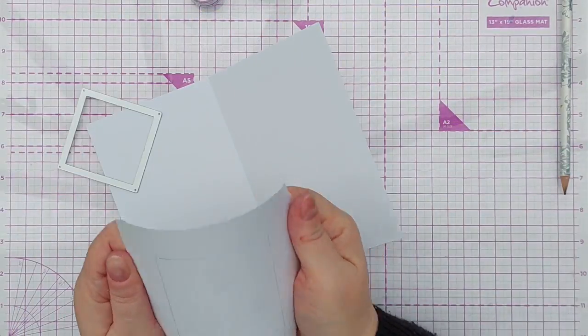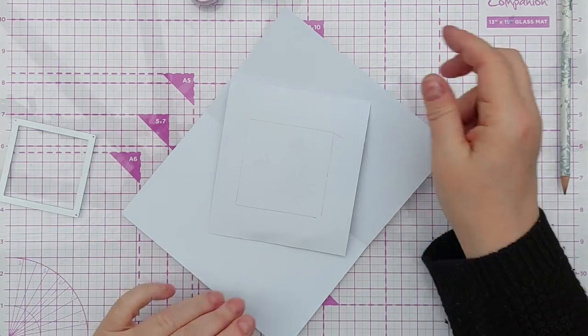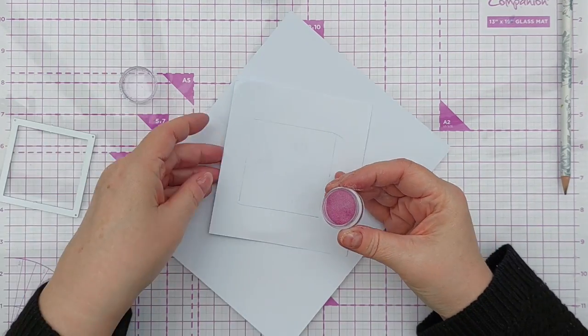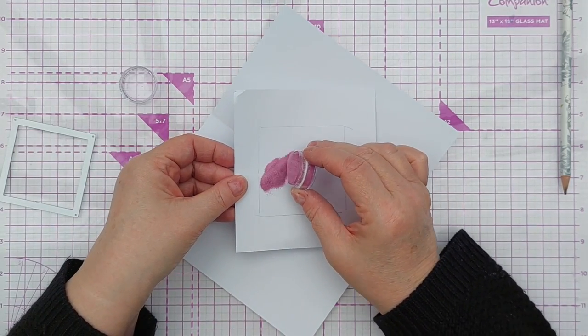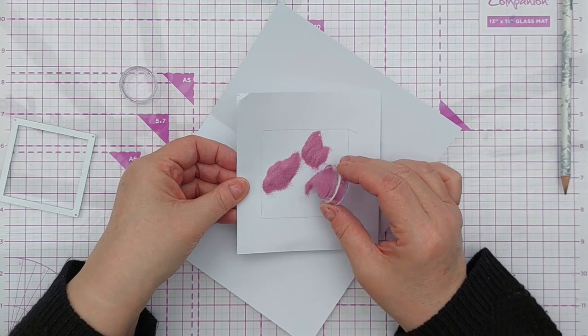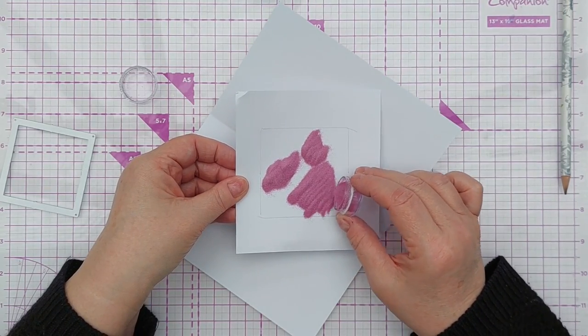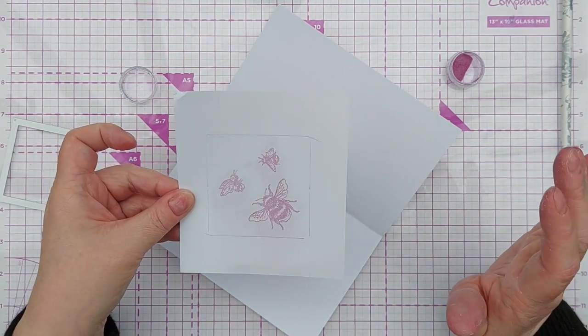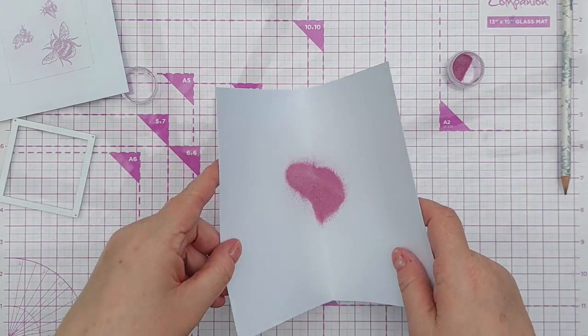I think for today's card I will use the raspberry jam embossing powder that I've just made and sprinkle that over my bees, tap that off and pop that back in its jar.